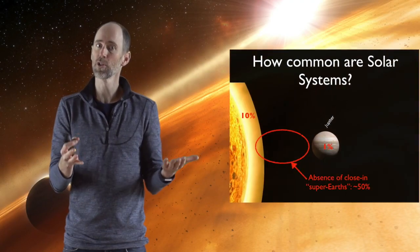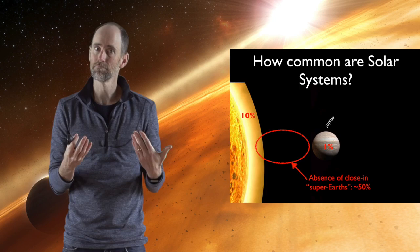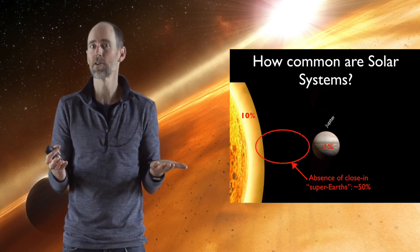Finally, there's one more thing to look at - not what the solar system has, but something it doesn't have. About half of stars like the Sun have close-in super-Earths, and we don't. That's about a 50% probability right there.